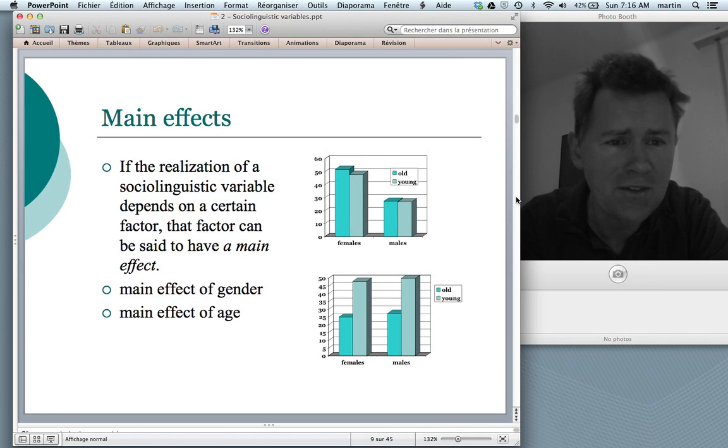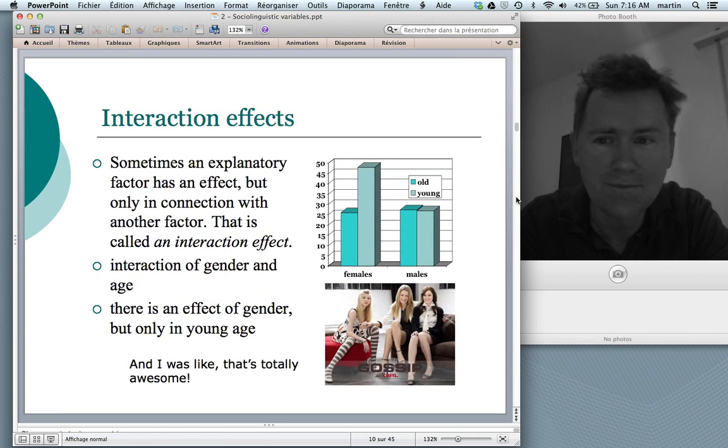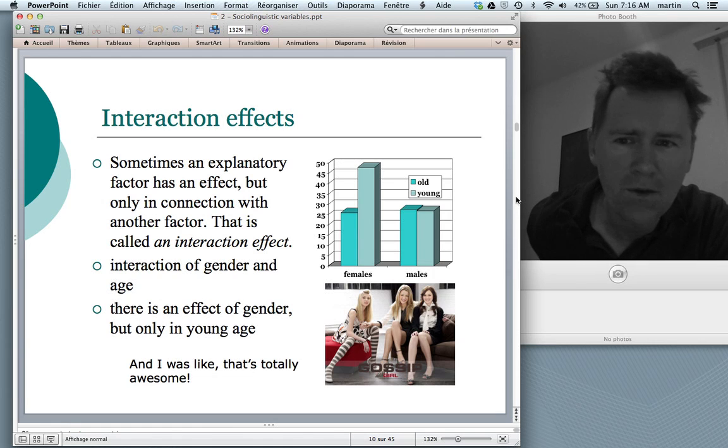But often, things are more complicated than that. There are so-called interaction effects. So this means that sometimes a factor has an effect, but only in connection with a second factor. That's called an interaction effect. And an interaction effect is shown in the graph you see here. Again, we have the four bars. We have females, old and young, males, old and young.